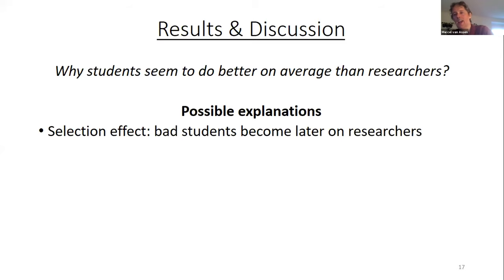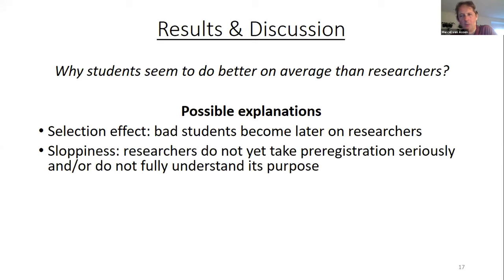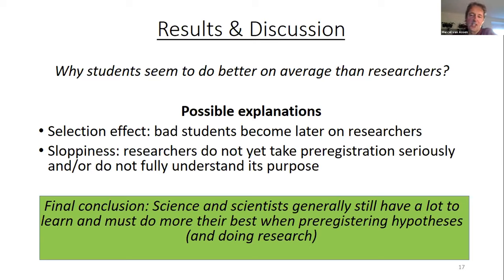And why do students do better than researchers? One obvious explanation is that only bad students become researchers, but I don't believe that. I think it's sloppiness. Researchers can make hypotheses well, just like our first-year students, but they do not yet take pre-registration seriously and or do not fully understand the purpose — that you have to specify this path for your research from hypotheses to the final conclusion.